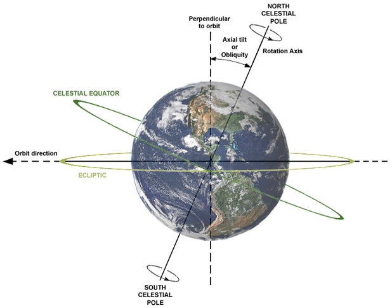J. Laskar computed an expression to order T¹⁰ good to 0.02° over 1,000 years and several arcseconds over 10,000 years: ε = 23°26'21.448" − 4680.93T − 1.55T² + 1999.25T³ − 51.38T⁴ − 249.67T⁵ − 39.05T⁶ + 7.12T⁷ + 27.87T⁸ + 5.79T⁹ + 2.45T¹⁰, where here T is multiples of 10,000 Julian years from J2000.0.